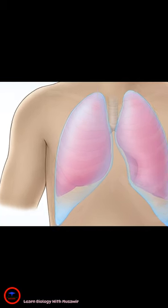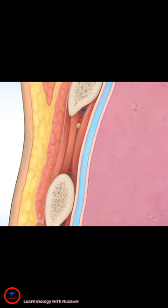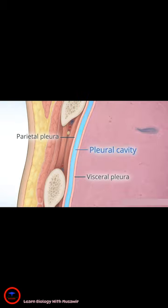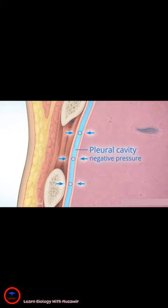The lungs are surrounded by pleural membranes. Between the parietal pleura and visceral pleura, there is a fluid-filled space called the pleural cavity. The pressure in the space is negative.